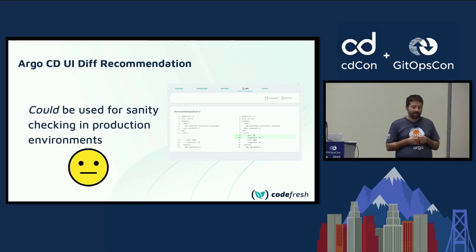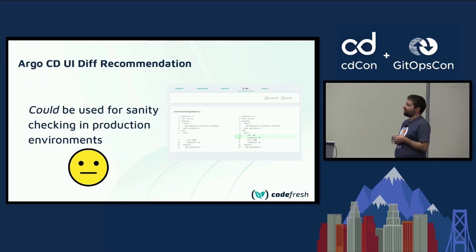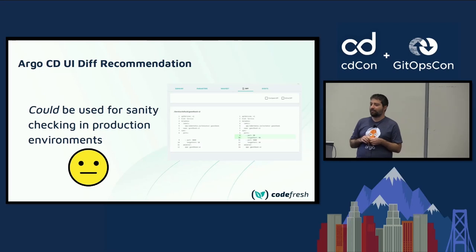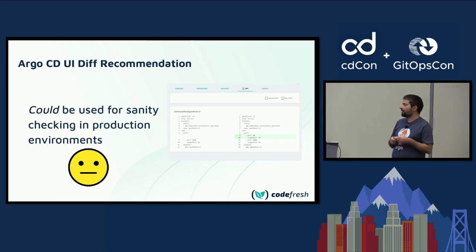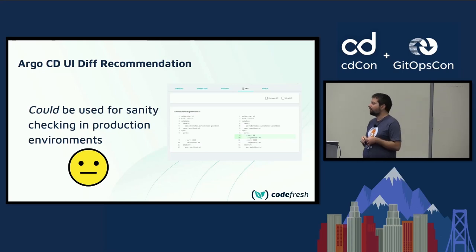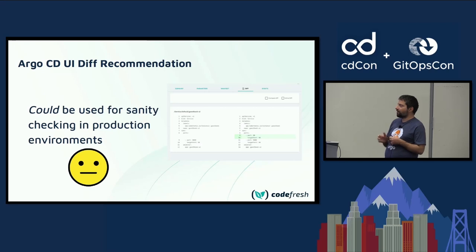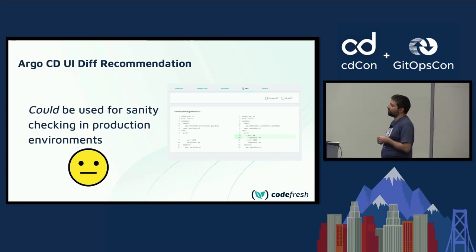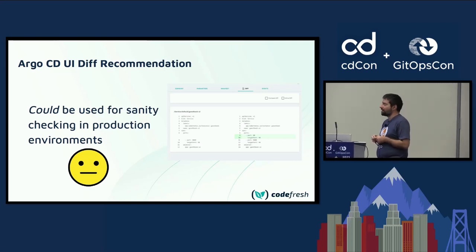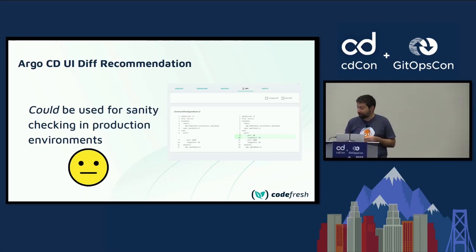So, can you use this? Yes, I think you can. I would only do it in production environments where many people don't want to have auto-sync enabled — they want an actual human to be able to approve the pull request. And I would use it only for sanity checking. I have already done my official checks and official approvals of the pull request, and I'm just having a last set of eyes, only for last-minute verifications.